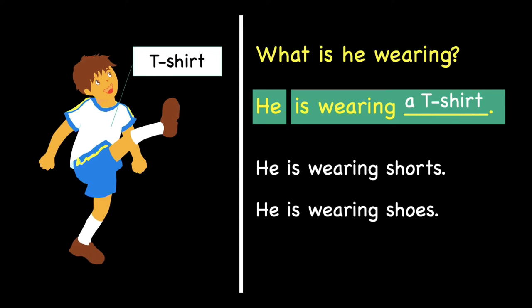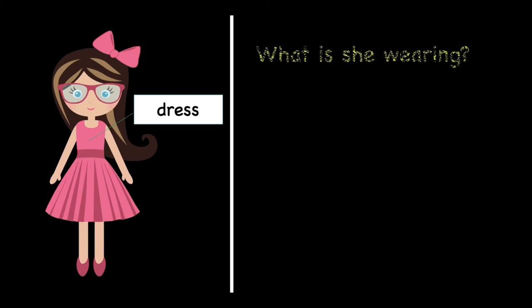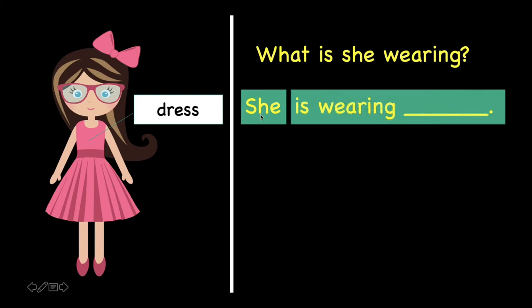Next, let's take a look at this girl. Yes, she is wearing a dress. Now, what if someone asks you, "What is she wearing?" We should start with she, because she is for girl. Girl takes she. She is wearing blank. So, what is she wearing? It's a dress. She is wearing a dress.